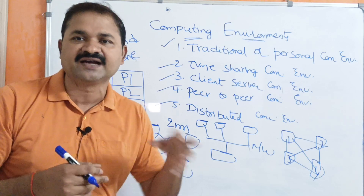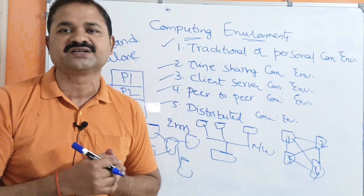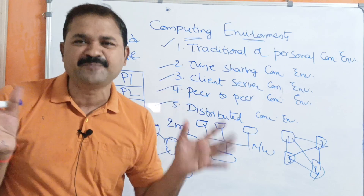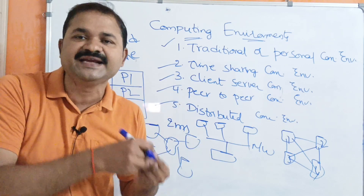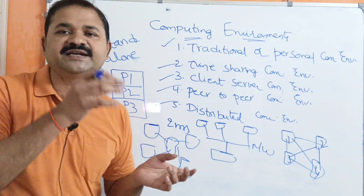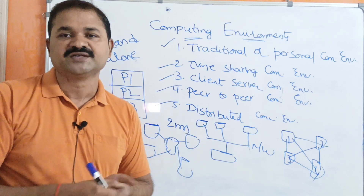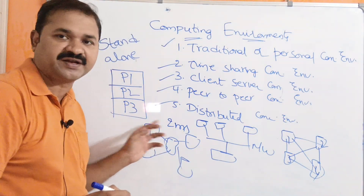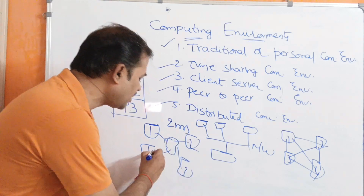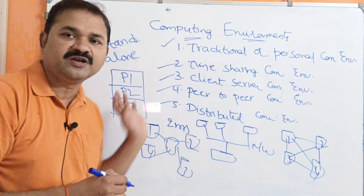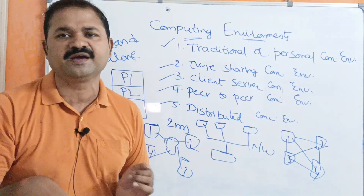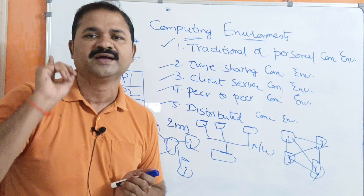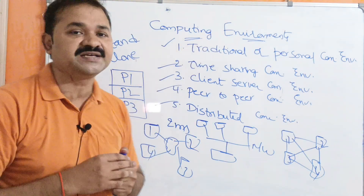For example, when developing a large project we need requirement analysis engineers, design engineers, coding engineers, and testers — different departments. Each department also needs information from the remaining three departments. In that case, we use a distributed system so information is shared among all computers. The information in the first computer is shared among computers two, three, and four, and likewise for all computers. This is distributed computing — mainly useful for developing large applications. These are the various computing environments.